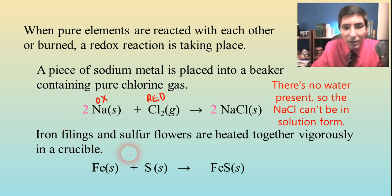Iron is zero. And here it's positive two. So it looks like this is going up in charge, which is oxidized. Sulfur is reduced because it's going from a zero over to a negative two on this side.